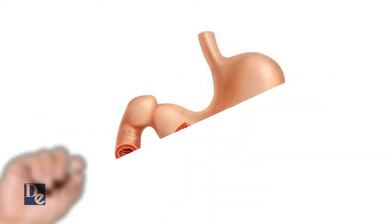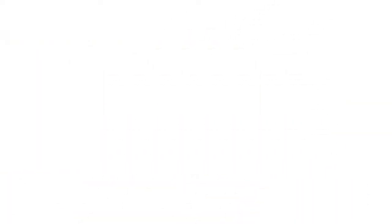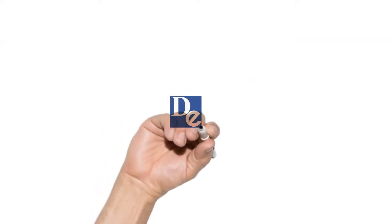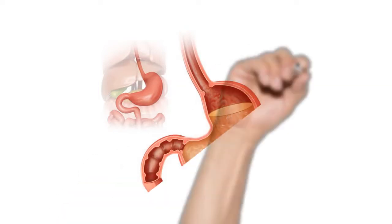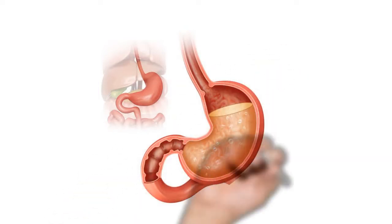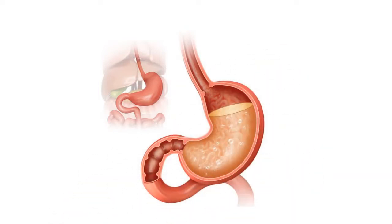The bolus now enters the stomach. Folds in the stomach wall, called rugae, allow for expansion as the stomach fills. Stomach cells secrete hydrochloric acid, pepsinogen, and various regulatory hormones that chemically digest the bolus. Muscular contractions in the stomach churn its contents to further break down the bolus, and mix it with stomach secretions to form a thick liquid called chyme.